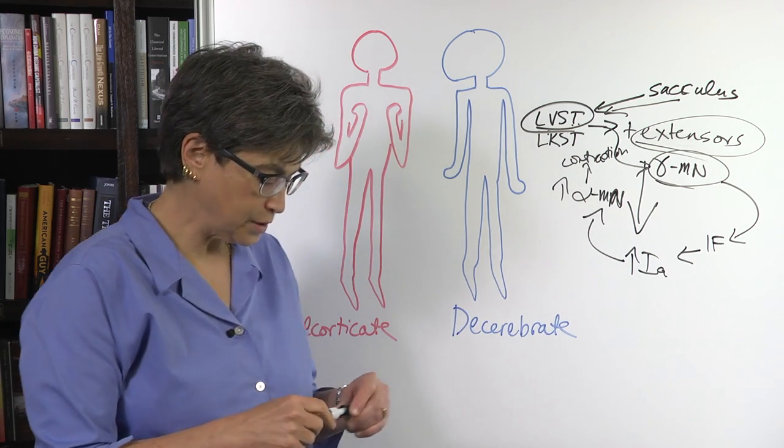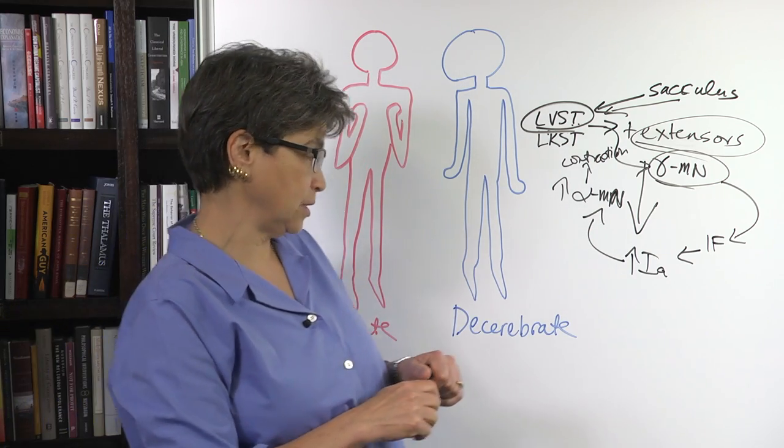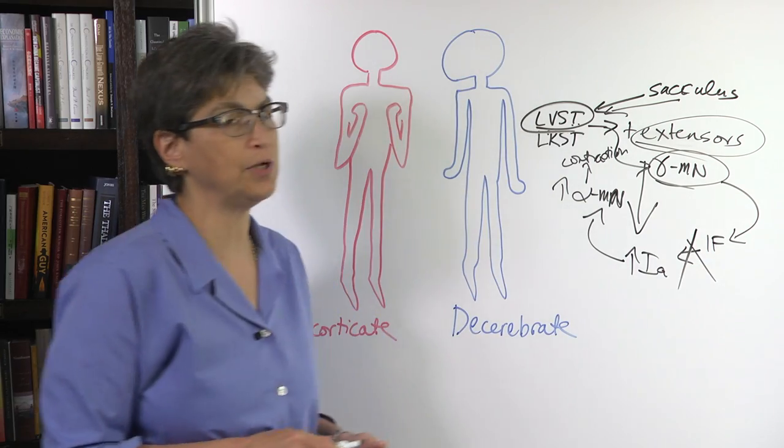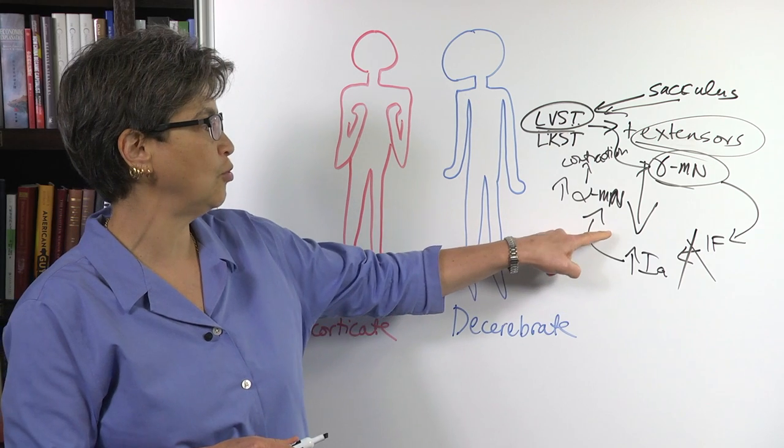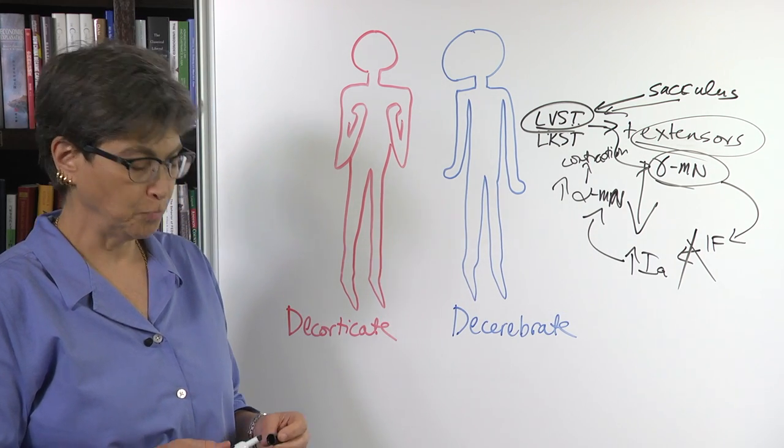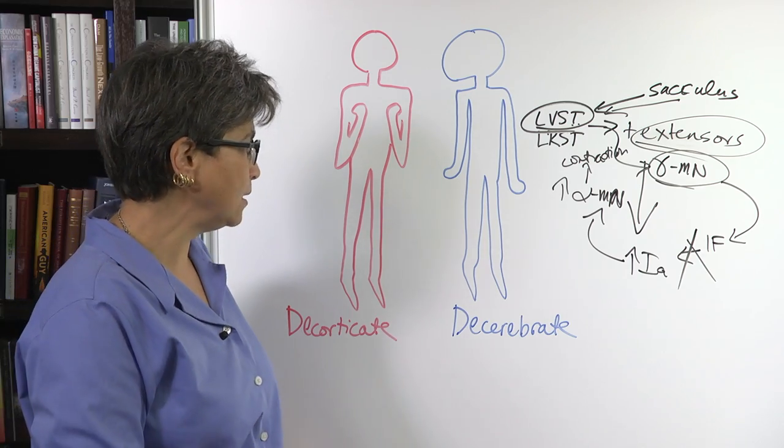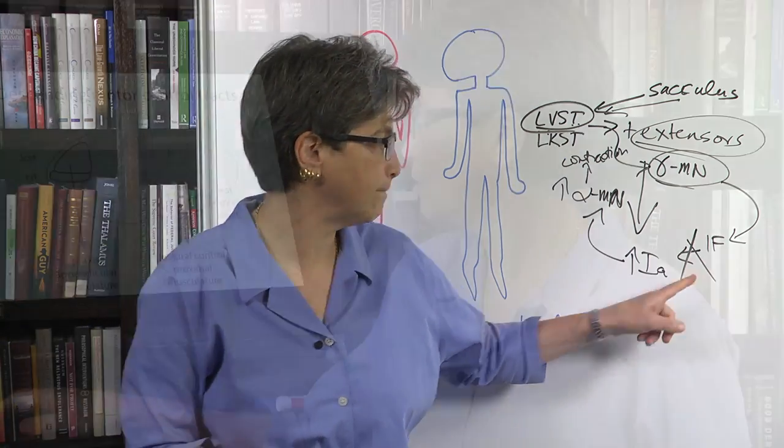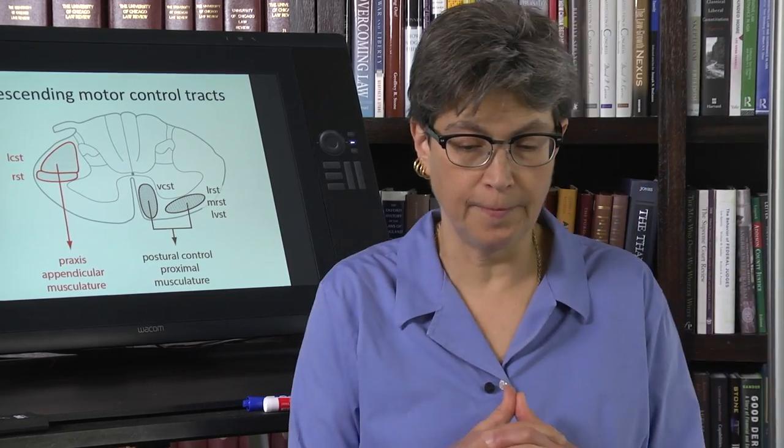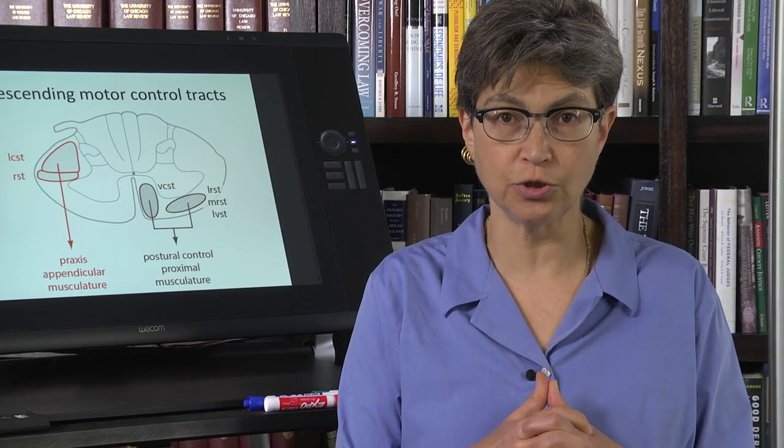And what's the upshot of that is that if you cut, if the sensory input is cut, then there's no more decerebrate posturing. Okay? So this is dependent on sensory input. Okay. So that's it for postural control.